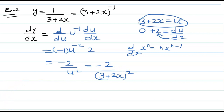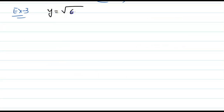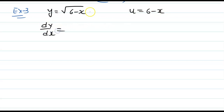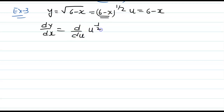Go for example 3 now. Let us take y equal to the square root of (6 minus x). Here let us take u equals 6 minus x. So this can be written as (6 minus x) to the power half. We can write dy over dx as d over du of u to the power half times du over dx. If you find du over dx from u equals 6 minus x, we get minus 1.